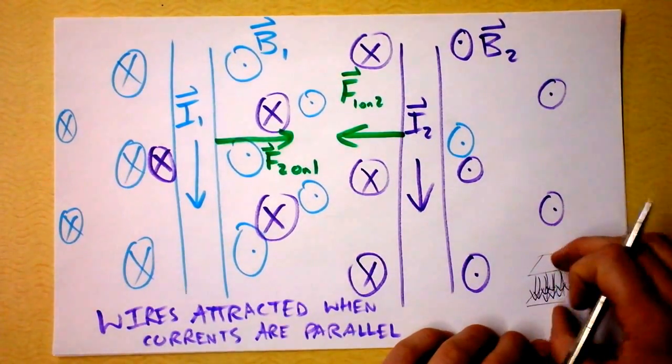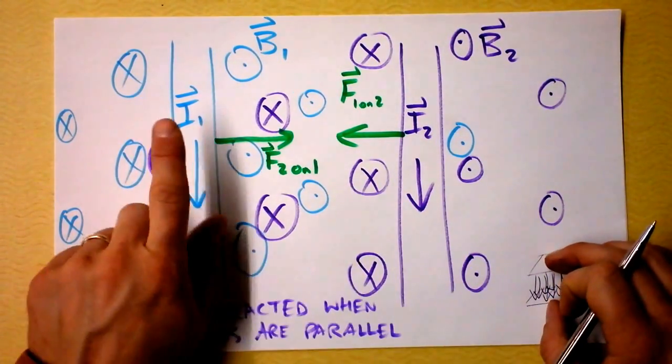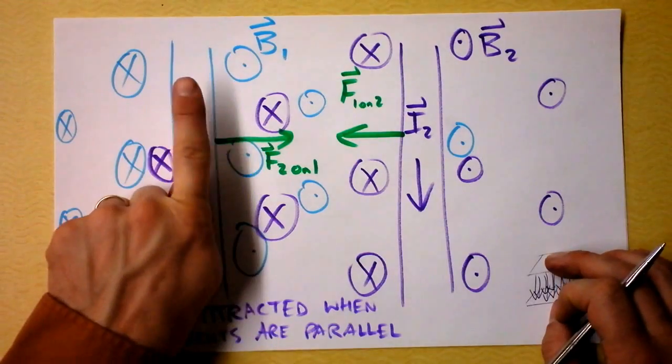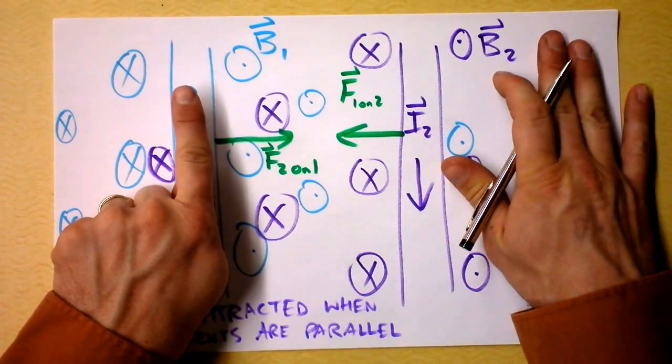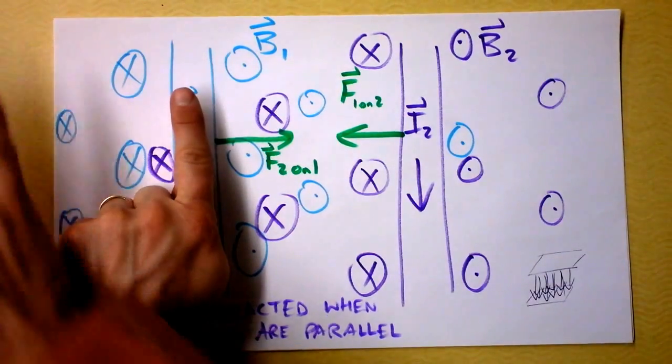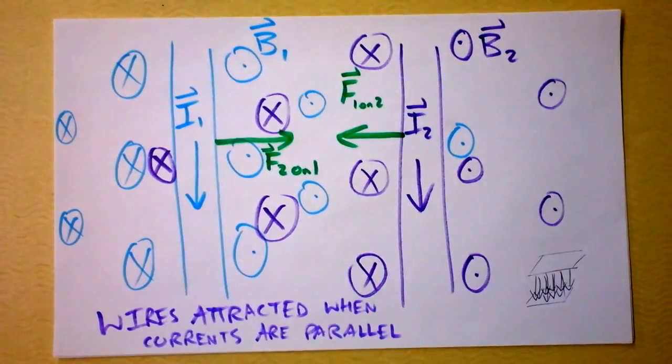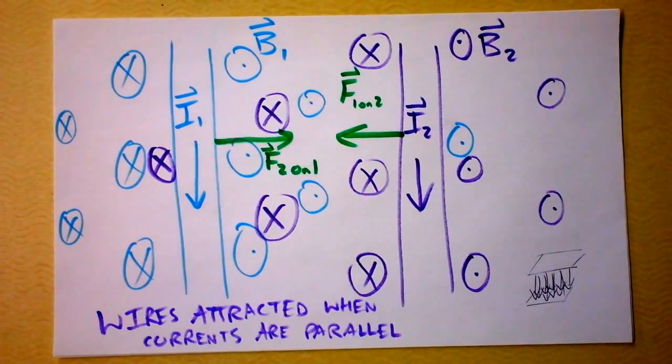And you can find something a lot more like a parallel plate capacitor if you reverse the current of one of these. Like, if this one were going up, we'd have a big field in here, no field out here. Well, essentially no field out here, and no field out there. And that's the basis for building something called a solenoid, which is going to be awesome, but not for right now. See you again.